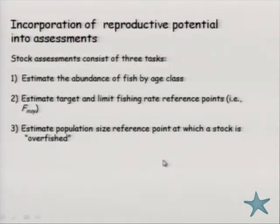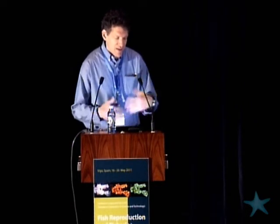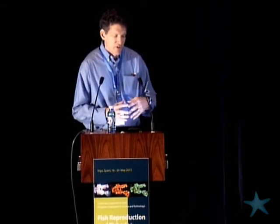When I think about incorporating these concepts into assessments, I see at least three critical tasks. First, we need to estimate the abundance of fish by age class — the statistical mechanics of fitting models to data. Second, we need to estimate reference points — both fishing rate reference points in terms of target and limit rates, and reference points for declaring a stock overfished. This gets into the depletion concept and our control rule plots, where we need to place our stock in terms of whether it's currently overfished and whether we're experiencing overfishing.